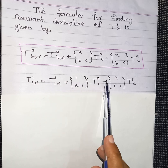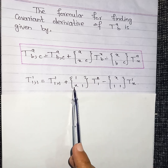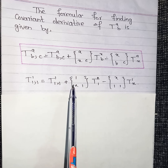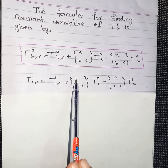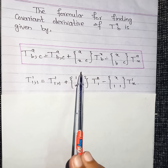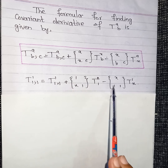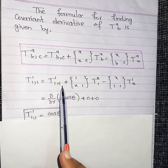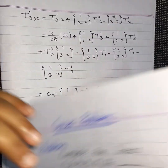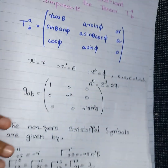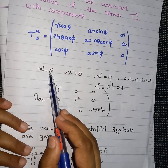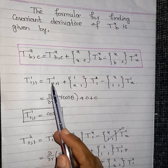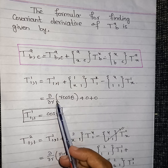This equals t_{11,1} — the comma denotes partial derivative and the semicolon denotes covariant derivative — plus additional Christoffel symbol terms. Since there are no non-zero Christoffel symbols with one in the contravariant position and one-one in the covariant position, those terms vanish. Since x1 represents r, this is a partial derivative with respect to r applied to t_{11}.